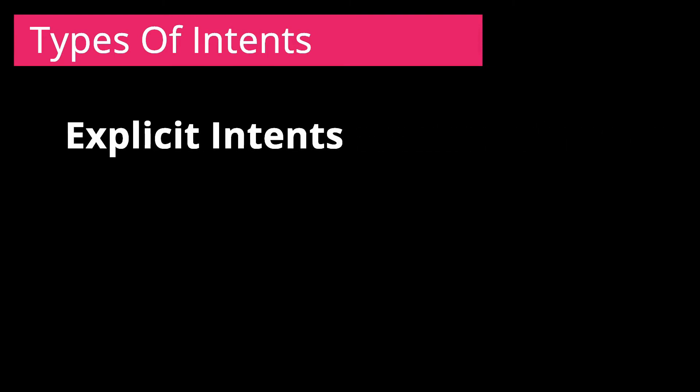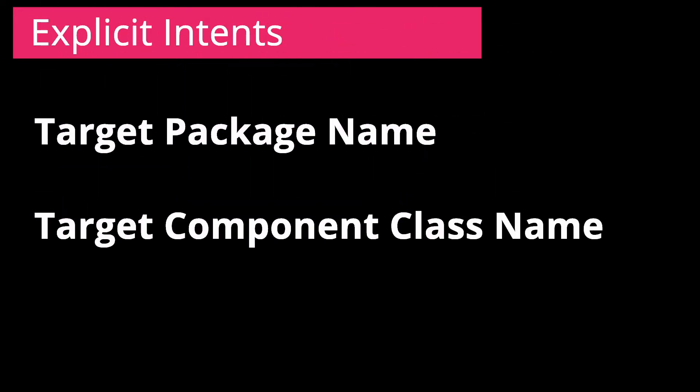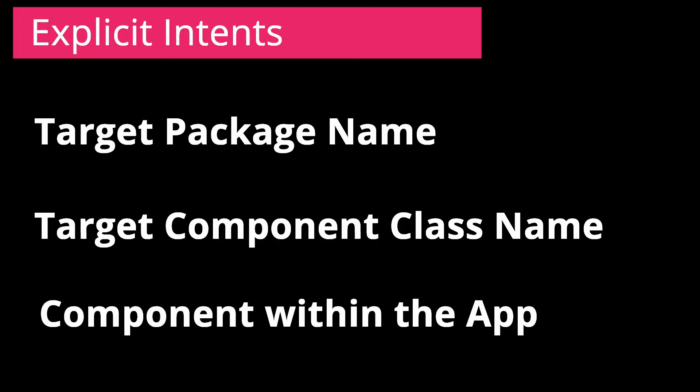There are two types of intents: explicit intents and implicit intents. Explicit intents specify which application will satisfy the intent by supplying either the target app's package name or a fully qualified component class name. You will typically use explicit intents to start a component in your own app because you know the class name of the activity or service you want to start.